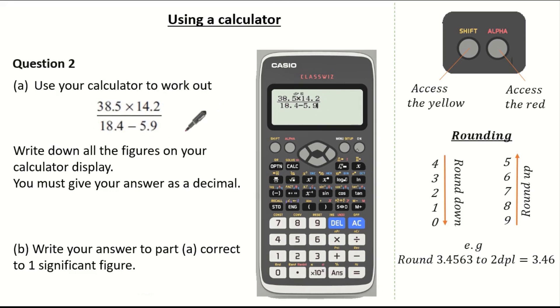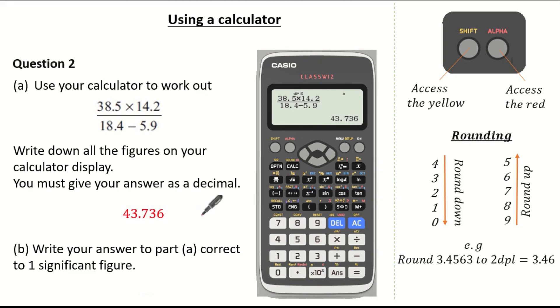Now pressing equals will reveal the answer as a fraction, but we want it as a decimal. So press SD to convert it into a decimal to give us 43.736.